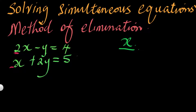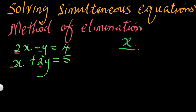They should be a 2 or a minus 2. The same thing applies for y: this is minus 1 and this is 2. If I want to eliminate y, I should make sure that I have 2s in front of both of the y's. So how do I achieve that?